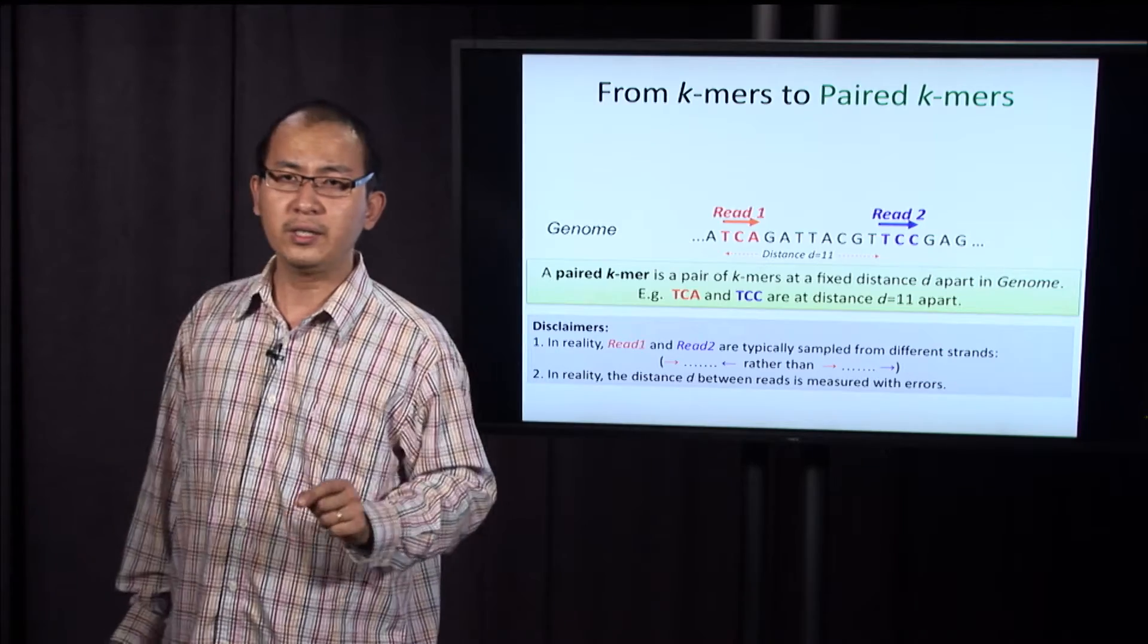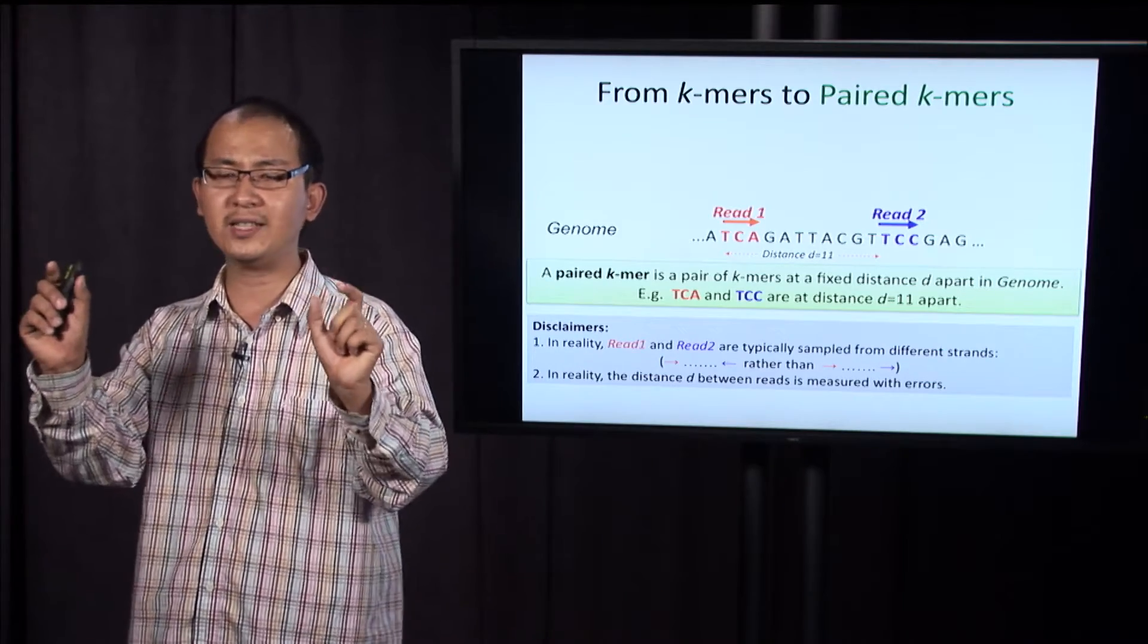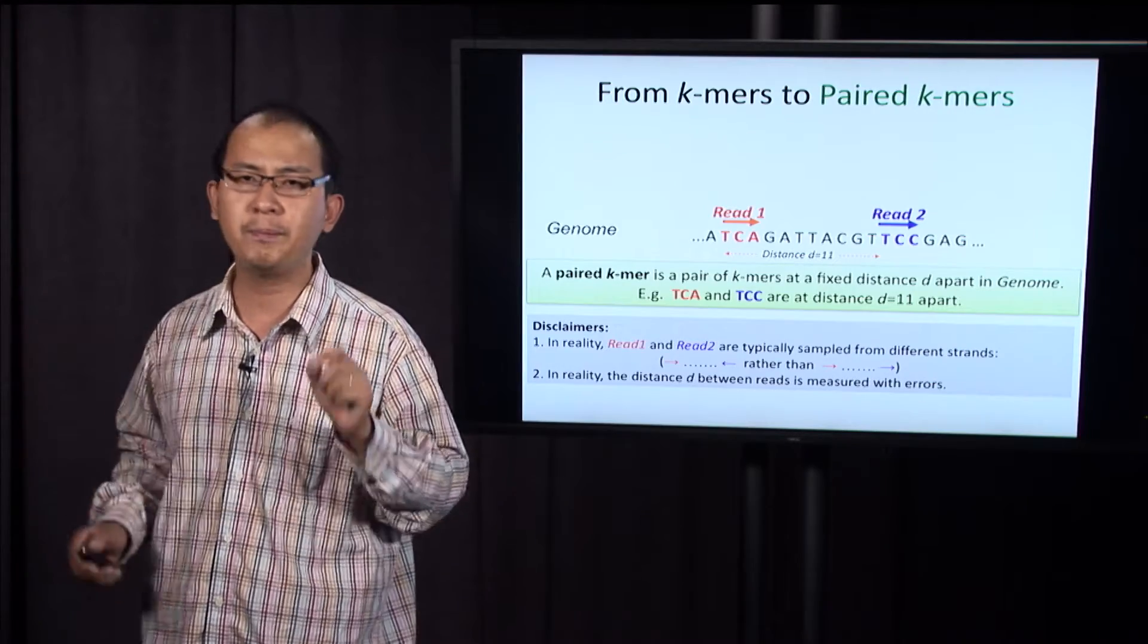So, given two k-mers, if they are at a fixed distance d apart in the genome, we call them a paired k-mer.